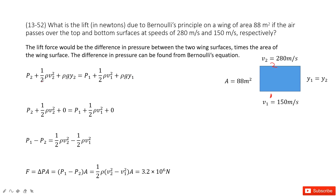We apply Bernoulli's equation. At position 1, the pressure equals this expression, and at position 2, the pressure is this expression. Since y1 equals y2, the height terms cancel. With v1 and v2 given, we solve the equation and get the pressure difference: p1 minus p2 equals this function. Agree?